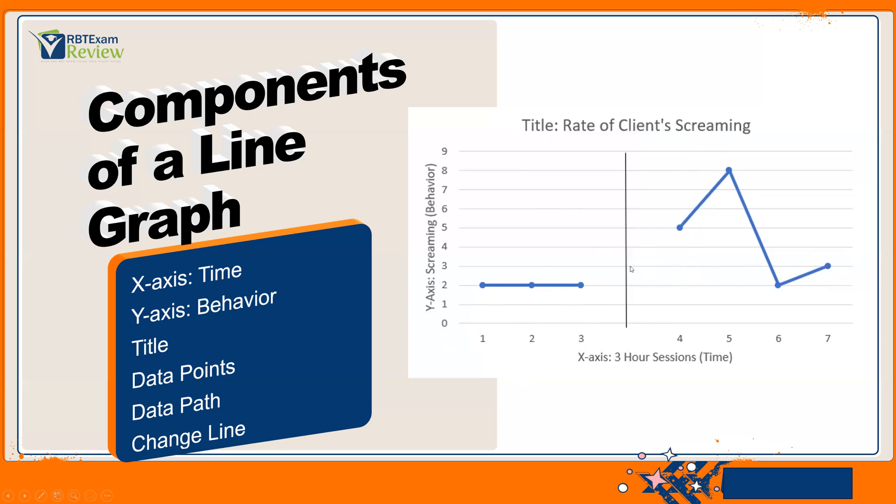And then you have your change line. This can be a condition change line or a phase change line. That's not too important as an RBT. Just know in this instance, for an RBT, this line is typically going to mean a change from baseline to intervention. So in this case, if our intervention is sessions four, five, six, and seven, this line indicates that sessions one, two, and three were baseline.